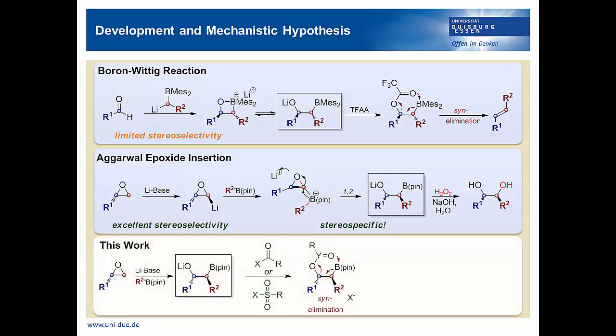So at first we set out to combine these two methods by trying to scavenge the beta-alkoxide with different acid chlorides. In our hands, however, this led to quite unsatisfying mixtures of E and Z alkenes. This is probably due to the fact that the resulting intermediates can undergo both syn- and anti-elimination under these conditions.